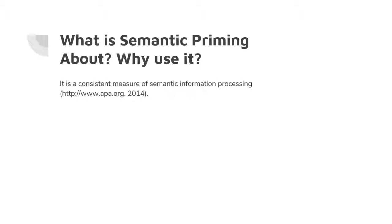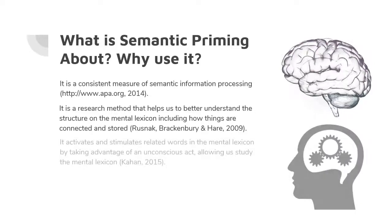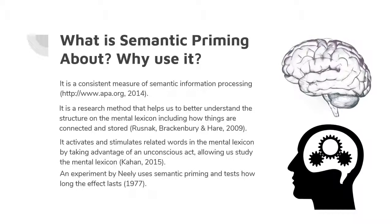Semantic priming is a research method that serves as a measure of semantic information processing. This means that it helps understand the connection between concepts in the mental lexicon. Semantic priming is used to detect and understand the structure of semantic memory. Studies have shown that priming activates and stimulates related ideas stored in the brain, artificially eliciting this response to give us a way to study unconscious acts of the mental lexicon. In an experiment by James Neely, he studies the brain's processing and activation following priming, as well as the extent of the effect.